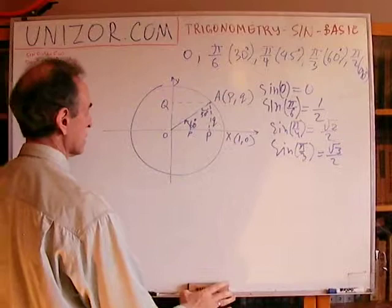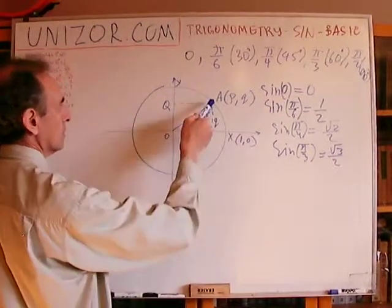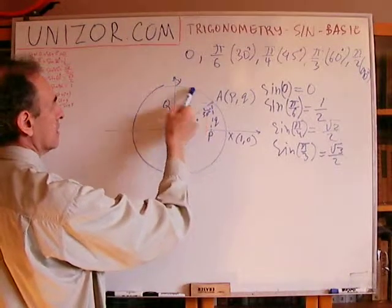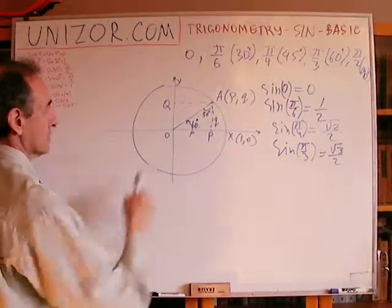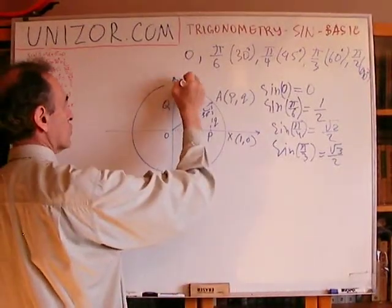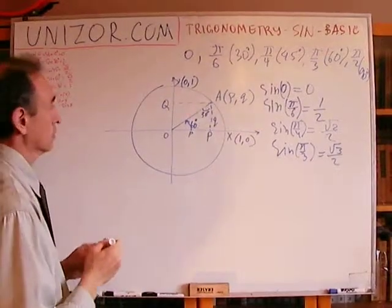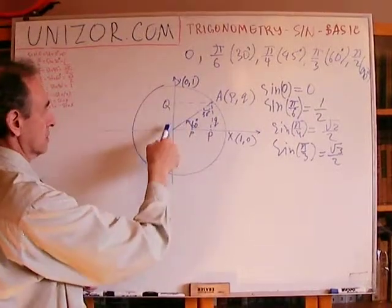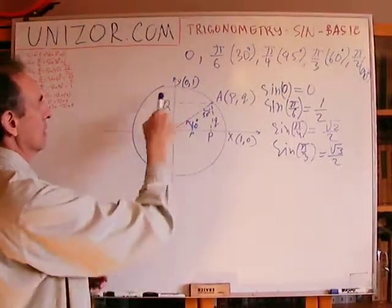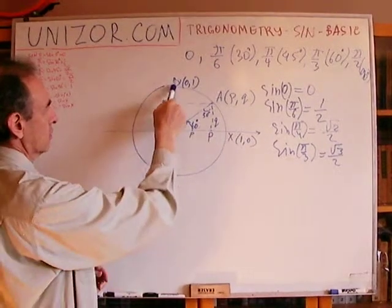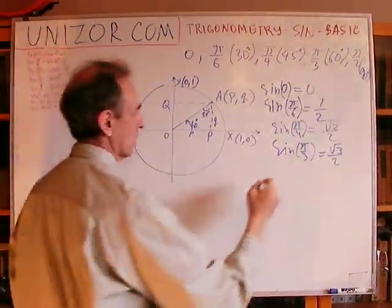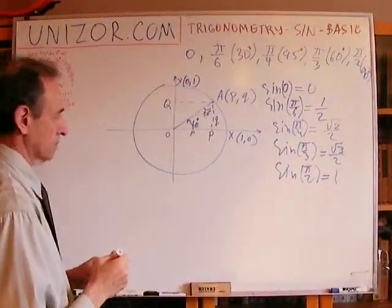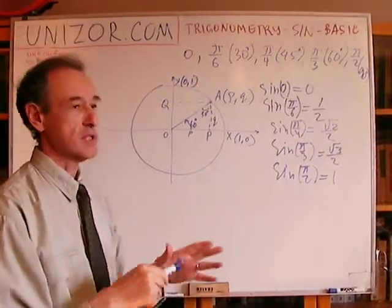Now, the last in this series is 90 degrees. When this angle is 90 degrees, it means we are turning all the way and A would coincide with Y. Now, its ordinate, obviously, would be the ordinate of Y, which is 1. Coordinate of point Y, which is an intersection of this unit circle with a Y axis, obviously, it has abscissa of 0 and ordinate of 1. So for sine of π over 2, we have equal to 1. Okay. So we have finished with these major angles.